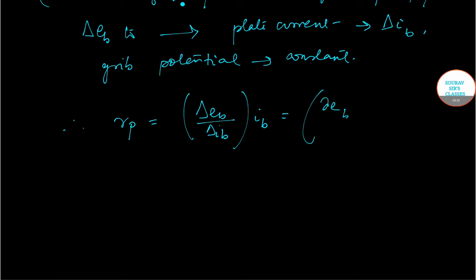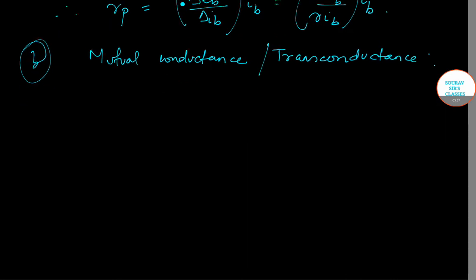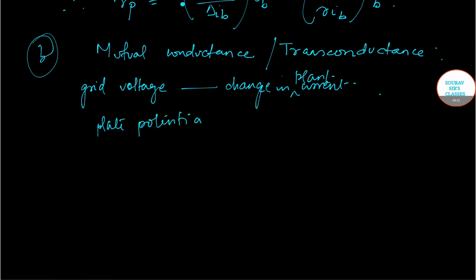Next we move on to the mutual conductance, or you can even term it as transconductance. This tells us the effectiveness of the grid voltage in bringing about change in plate current. This is done when the plate potential is kept constant.